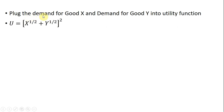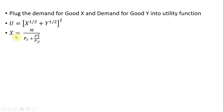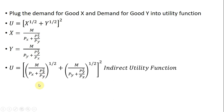The next step is we're going to plug the demand for good x and the demand for good y into the utility function. Here again is our CES — constant elasticity of substitution — utility function. For x and y I'm going to plug in the respective demand equations. The demand for good x and the demand for good y are given as derived. So plugging those equations into our utility function, we get this result, and this is our indirect utility function.